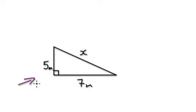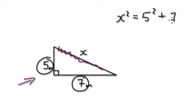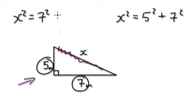Remember, Pythagoras only works if it's a right-angle triangle, just like trigonometry. The hypotenuse is the longest length and is always on its own. So it would be x squared equals 5 squared plus 7 squared. You can also write it as x squared equals 7 squared plus 5 squared — it's the same thing.